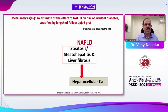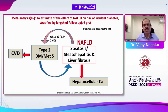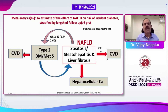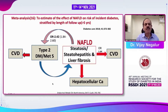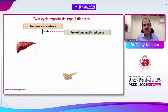A meta-analysis published in Diabetes Care looked at NAFLD and incident risk of diabetes over a five-year follow-up. The odds ratio for developing diabetes with NAFLD is about 2.6 — nearly a three-fold risk. NAFLD itself or concomitant cardiovascular disease contributes to a 64% increased risk of cardiovascular events or hepatocellular carcinoma. This is called a bi-directional association between fatty liver and type 2 diabetes.